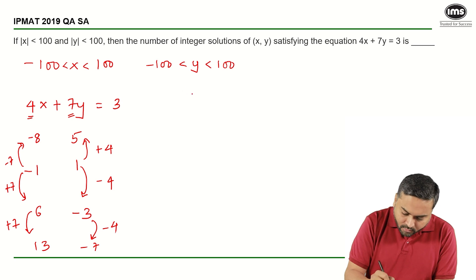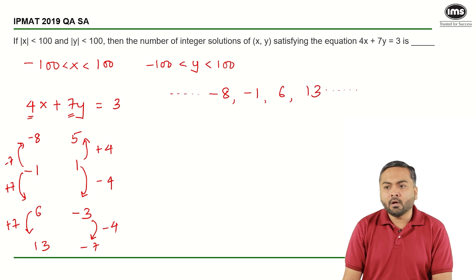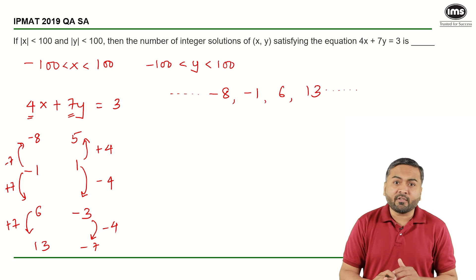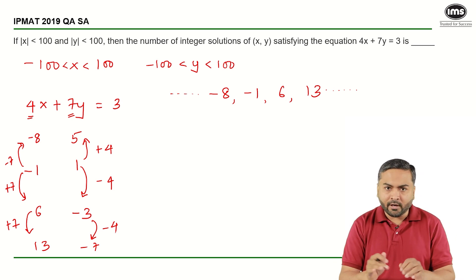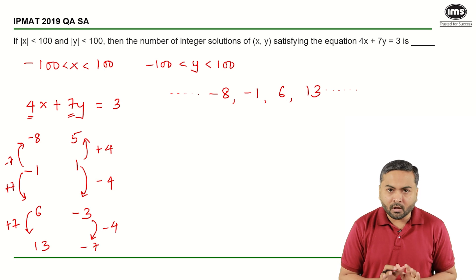So, if I see here, I have minus 8, then I have minus 1, I have 6, you have 13 and we have so on, right? So, we can use the concept of arithmetic progression here, right? And get the values, number of values that x can assume, right?